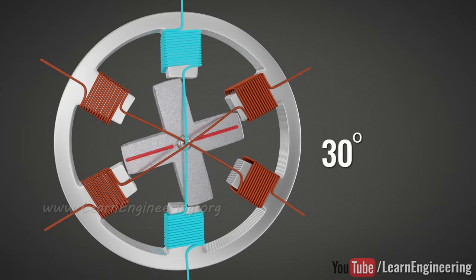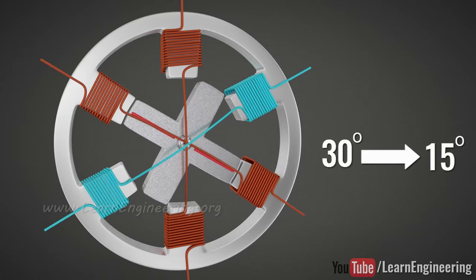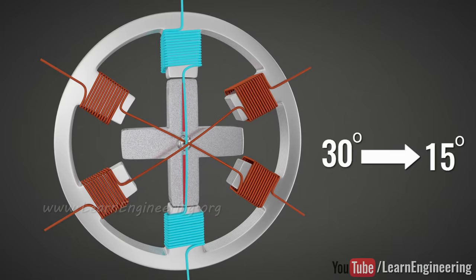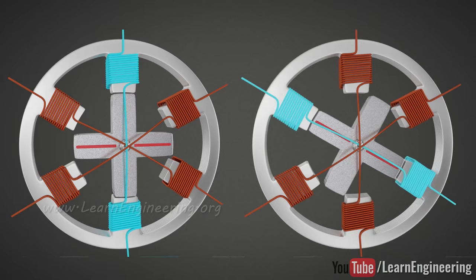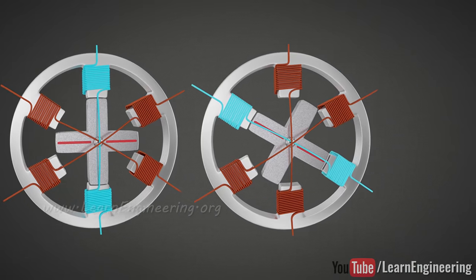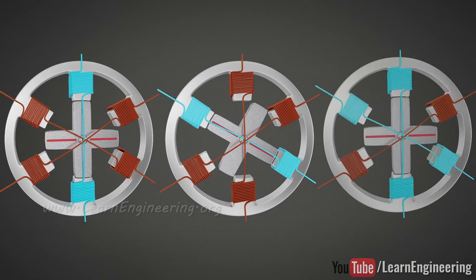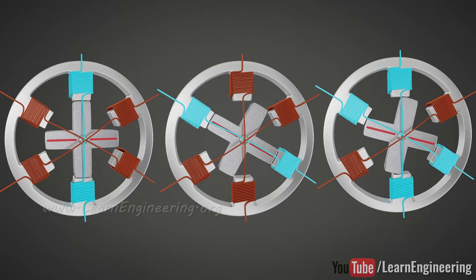You can improve the accuracy to 15 degrees with a small trick. When coil A is energized, the rotor is in this position. We know that when coil B is energized, it moves 30 degrees. What happens when coils A and B are energized together? The rotor will come to a position between these two cases, or it will move 15 degrees.